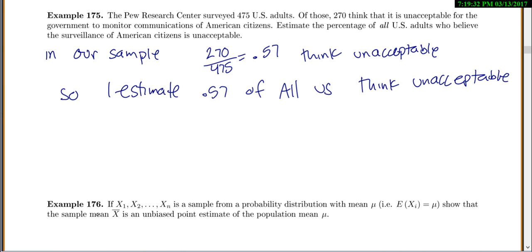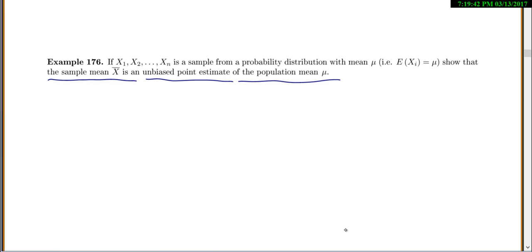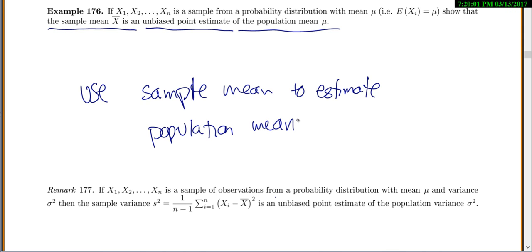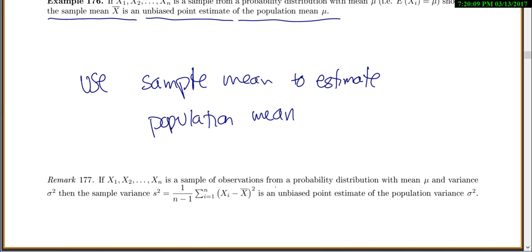I was going to do a proof that the sample mean x-bar is an unbiased or a good estimate of the population mean, but I think we'll skip the proof. We'll just remember that we use sample mean to estimate population mean. And it might seem obvious, yes, we use the sample mean to estimate the population mean, but we've actually had to do a lot of theory and prove that that is, yes, the best estimate.